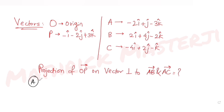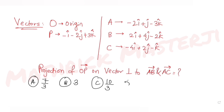The answer choices given are: option one, seven over three; option two, three; option three, ten over three; and option four, eight over three. We need to figure out which one is the correct answer.